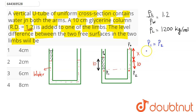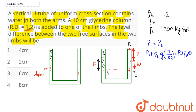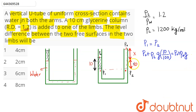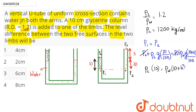The relative density of glycerin is 1.2, and since water density is 1000 kg/m³, glycerin density is 1200 kg/m³. Writing the pressure equations: P1 = P0 + ρ_glycerin × g × (10/100), and P2 = P0 + ρ_water × g × (10 + x)/100. Since P1 = P2, P0 cancels, and g/100 also cancels, giving: ρ_glycerin × 10 = ρ_water × (10 + x).